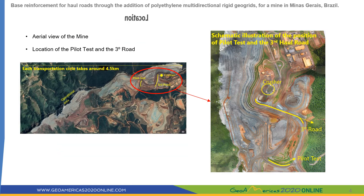On this slide we can see the aerial view of the mine. On the south we have the operational area, and on the north, indicated by the red circle, we have the pilot test, the haul road, and the crusher. Each transportation cycle from the operational area to the crusher covers around 4.5 km distance.